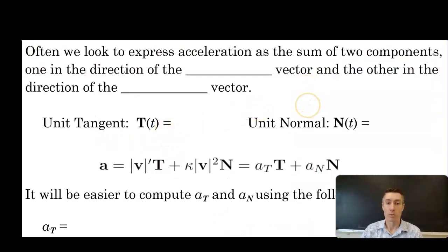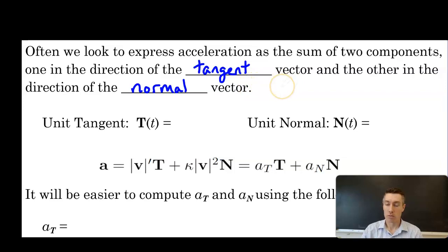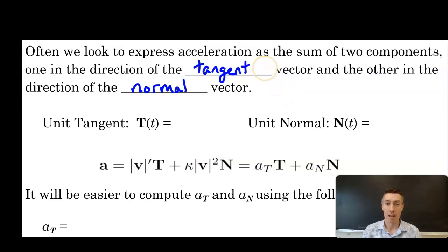We often look to express acceleration as the sum of two components: one in the direction of the tangent vector and one in the direction of the normal vector. We've done this before — back in our video on projections, we rewrote a vector as the sum of a projection vector plus an orthogonal vector. We're writing acceleration as the sum of a tangential projection vector plus an orthogonal normal vector.